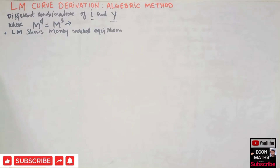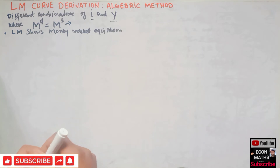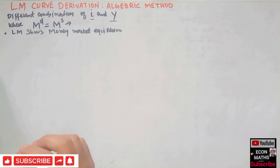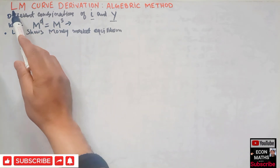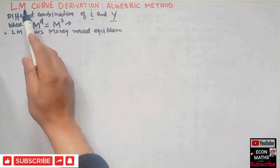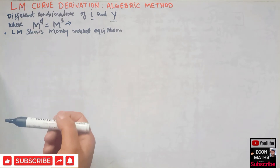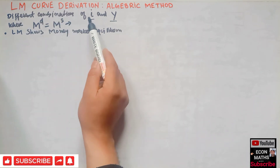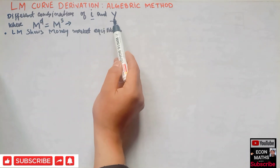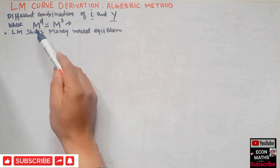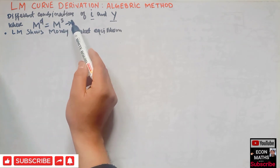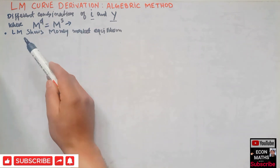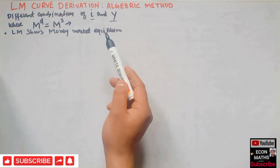Hi, this is Halal. In this video on the mathematical economics series, we will discuss the LM curve derivation by the algebraic method. I will try to keep this video very simple. L stands for liquidity preference and M stands for money supply. The LM curve shows us different combinations of rate of interest and income where demand for money is equal to supply of money, or in other words, the LM curve shows us the money market equilibrium.